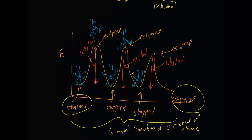Back to staggered, then back to eclipsed again — the rear hydrogen is blocked by the front one. Then I rotate one more time, 60 degrees in the same direction, and I'm back to staggered.